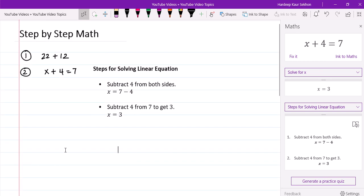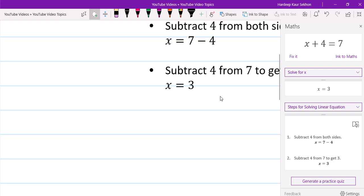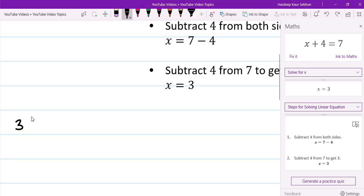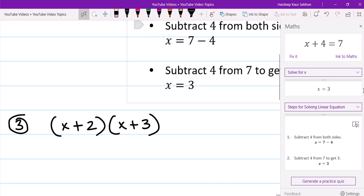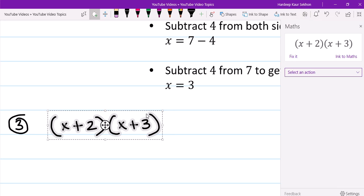All right, let's do question number three now. I'm gonna show you how you can use a math tool to multiply two binomials. So normally, how do you multiply binomials? You use the distributive property and the FOIL method, whatever you have been using. So now, again, you always have to use the lasso tool. I'm just going to use my pen now.